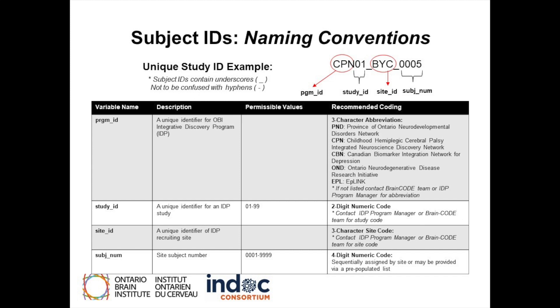Lastly, the subject number is a four-digit numeric code sequentially assigned by the site or provided via a pre-populated list at the site. This represents the subject's number for that site.